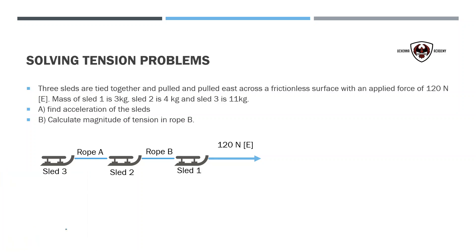When we talk about tension, it's on a single rope. So on this rope, there is a tension force experienced by sled 3, and that's tension A. The exact same tension is acting on sled 2, because tension A experienced by sled 3 is the same as the one experienced by sled 2. We've got rope B here, and again, we've got tension on both ends, and that tension is going to be equal.